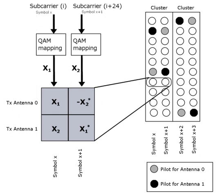A space-time code is a method employed to improve the reliability of data transmission in wireless communication systems using multiple transmit antennas. STCs rely on transmitting multiple redundant copies of a data stream to the receiver in the hope that at least some of them may survive the physical path between transmission and reception in a good enough state to allow reliable decoding.